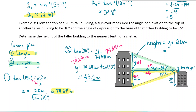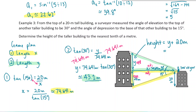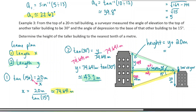So Y is approximately 43.1 meters. Finally, the total height equals Y plus 20 meters: 43.1 plus 20 is approximately 63.1 meters. So that's how tall the other building is.